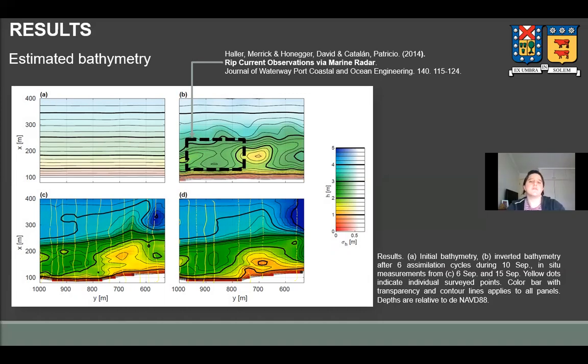Outside the surf zone, the result is less accurate and is followed by an increase in uncertainty, as is indicated by the color bar transparency. And also, where Y is less than 600 meters, the result is less satisfactory, where the FRF pier pilings induce scour and presumably other physical phenomena that we are not considering in the forward model.